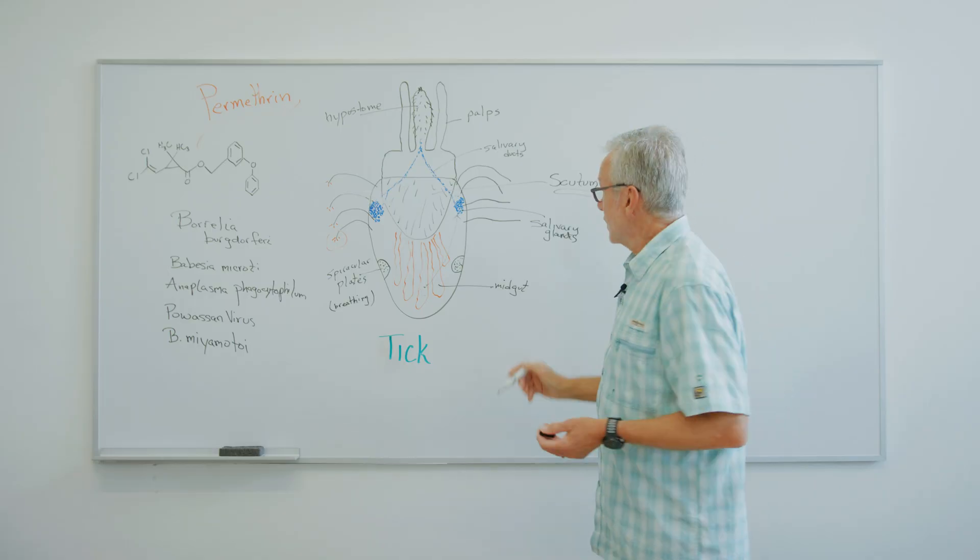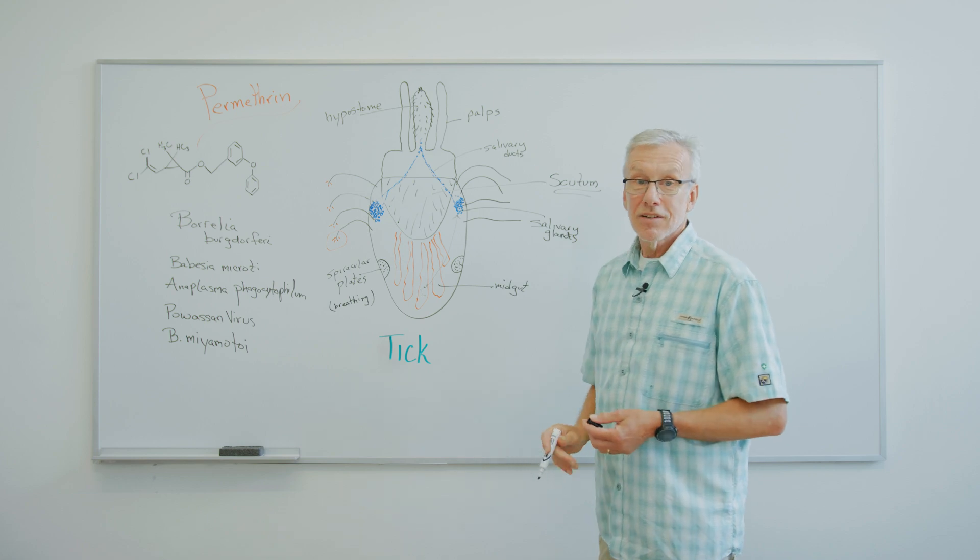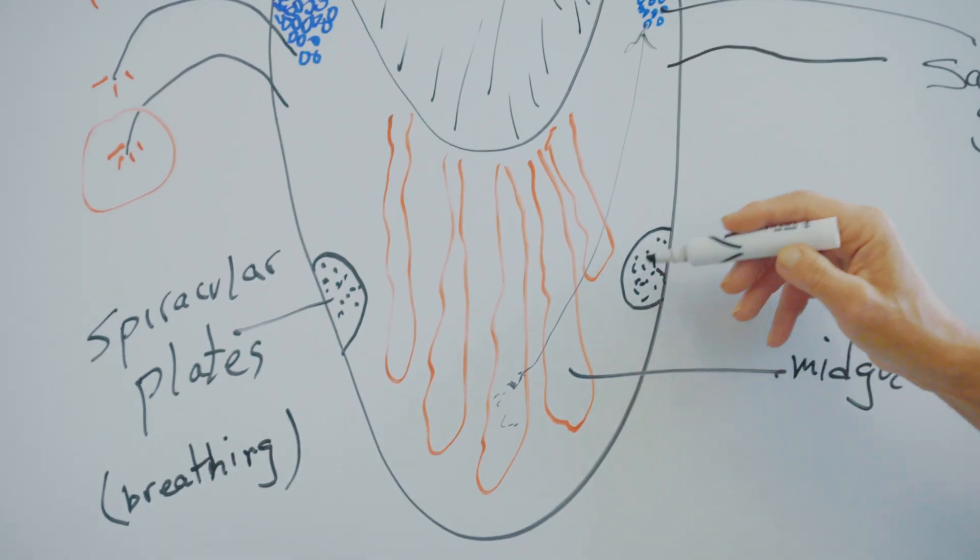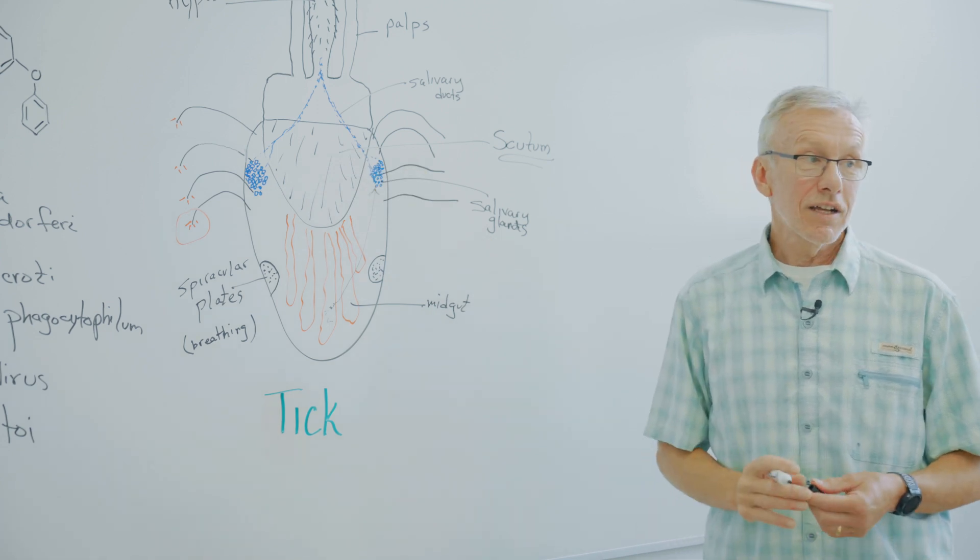Some people want to know what these things are. Maybe they've noticed them, maybe not. That's how a tick breathes. So oxygen goes in and through tiny little tubules actually goes to each and every organ inside of the tick.